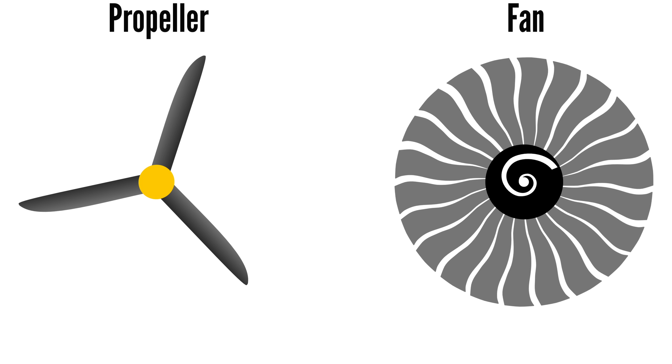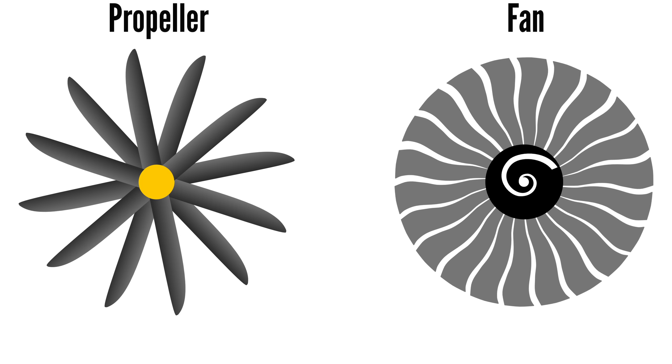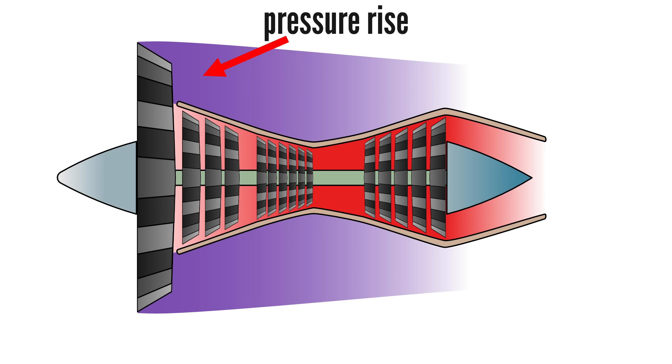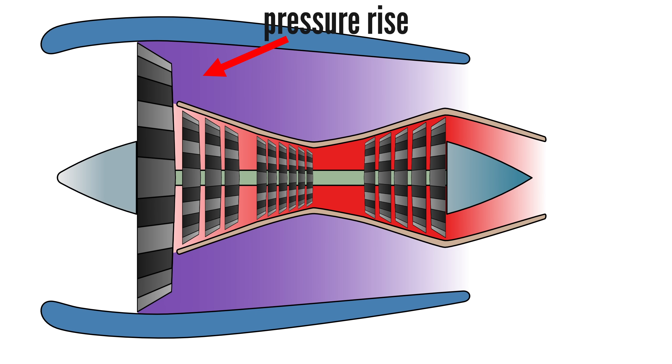So a fan may look like a propeller just with more blades, but fans are more like compressors, producing a pressure rise behind the blades. The duct helps contain that pressure and uses it to create thrust by feeding it through the bypass nozzle.